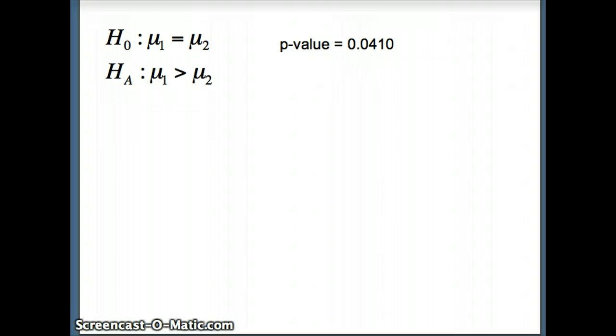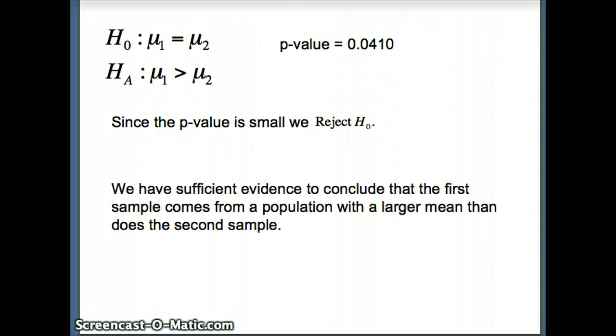So there's our H₀ and Hₐ with our p-value. Since the p-value is small, we're going to reject H₀. So therefore, we have sufficient evidence to conclude that the first sample does come from a population with a larger mean than does the second sample.